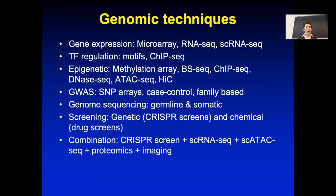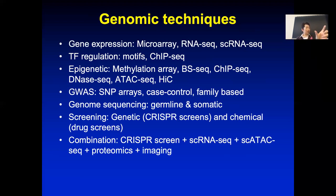Very recently, people are also starting to combine imaging with single-cell RNA-seq or single-cell chromatin profiling. Harvard's Xiaowei Zhuang lab is a pioneer in this. They use barcoded probes that target a particular RNA — the probe hybridizes to the RNA transcript in the cell, and you can sequence out the barcodes. They hybridize and then wash off.